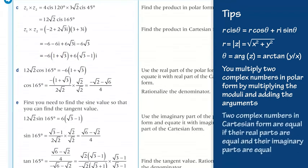Part d. Two complex numbers in Cartesian form are equal if their real parts are equal and their imaginary parts are equal. Equate the real parts to calculate the exact value for cos(165°): 12√2·cos(165°) = −6(1 + √3). Express cos(165°) as the subject and rationalize the denominator: cos(165°) = −(1 + √3)/(2√2) × (√2/√2) = −(√2 + √6)/4.